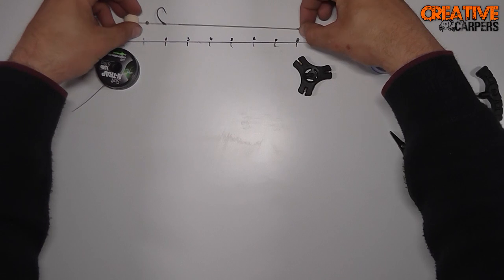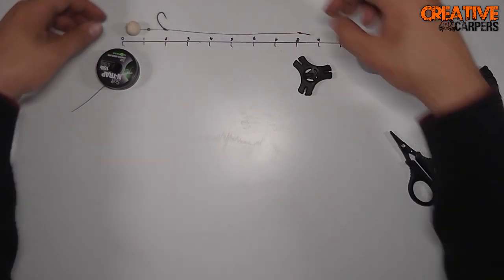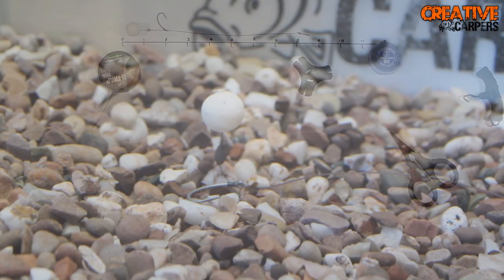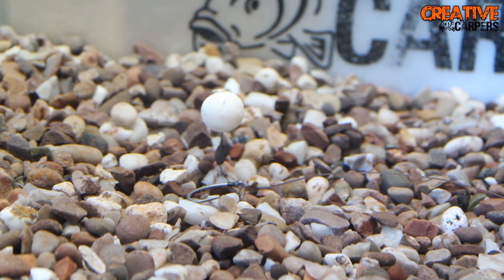So here we are, the tent test. As you can see, the hook lays flat on the bottom with the pop-up just hovering a little bit above. I don't know if you can see there, but I did actually have to add a little bit of putty to stop the whole hook lifting up, but that's how it should look on the lake bed.